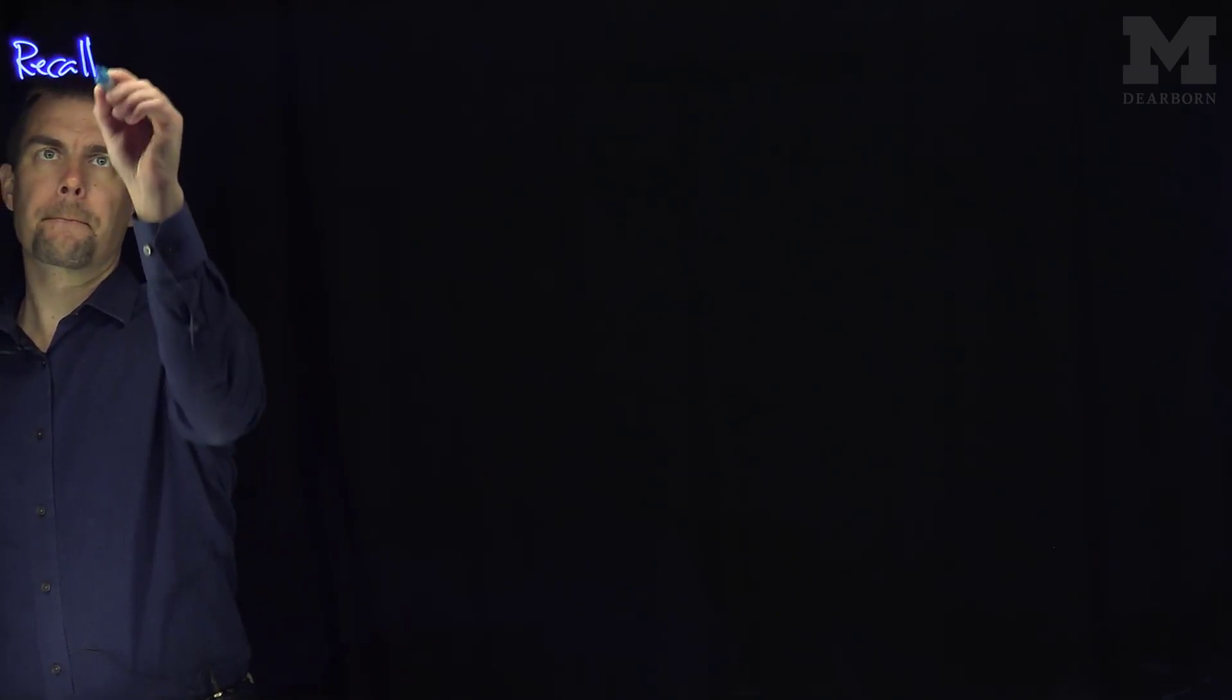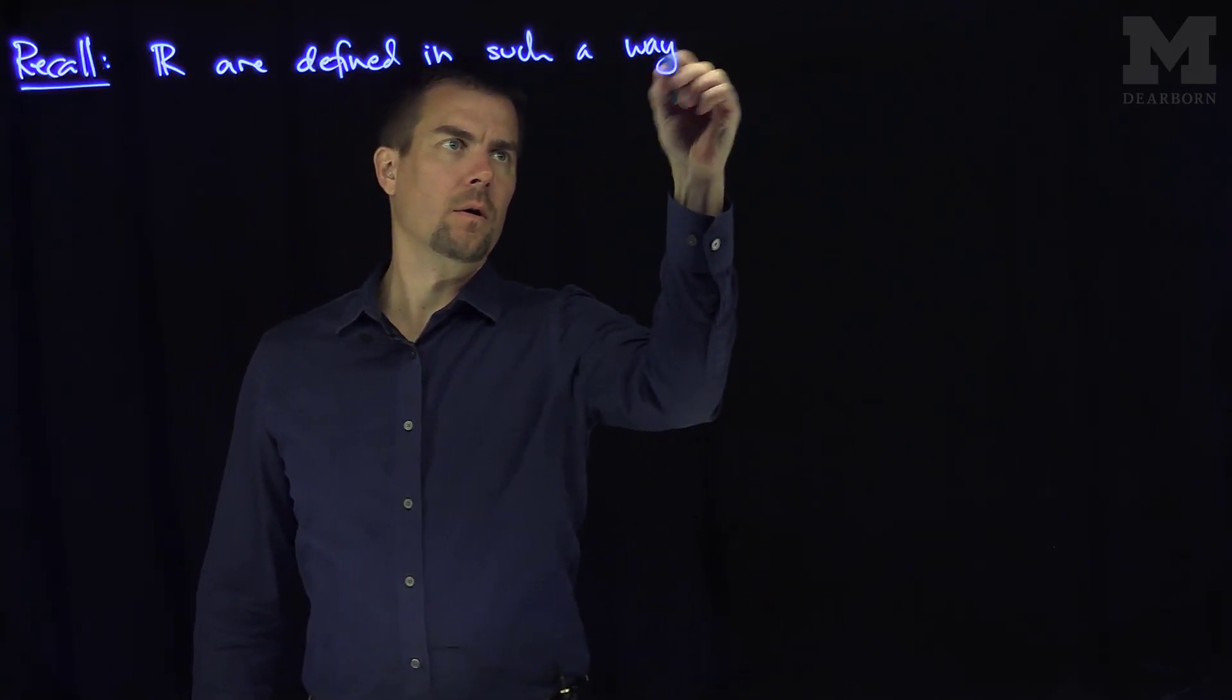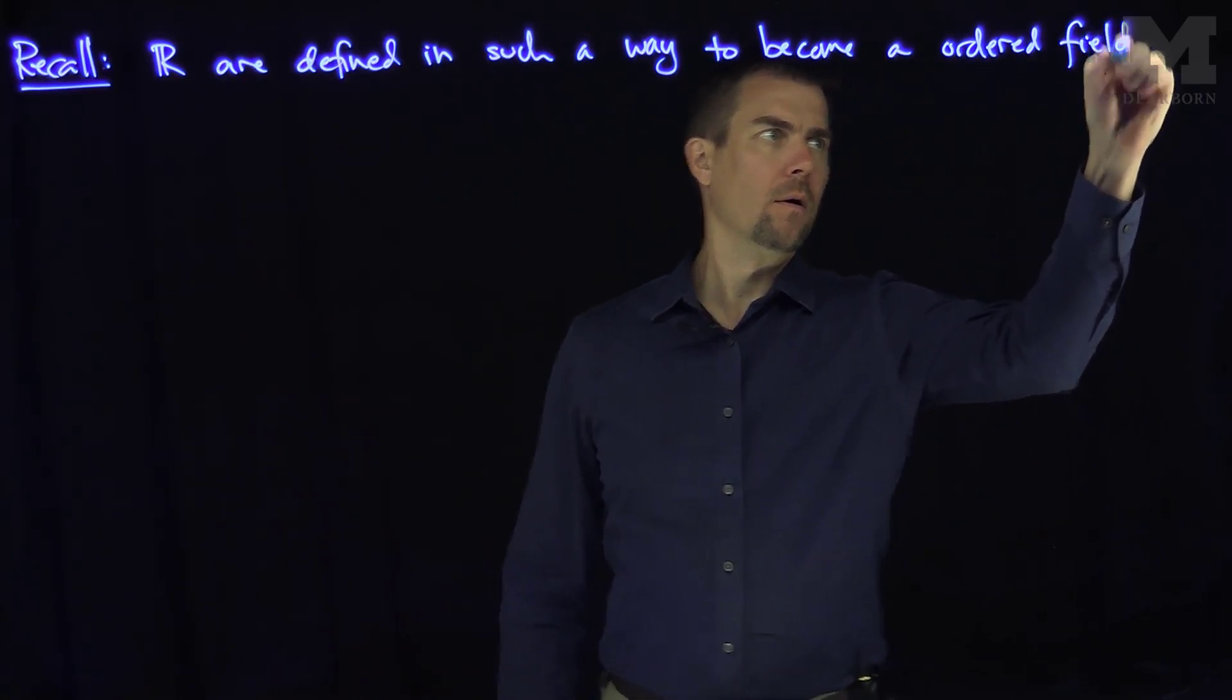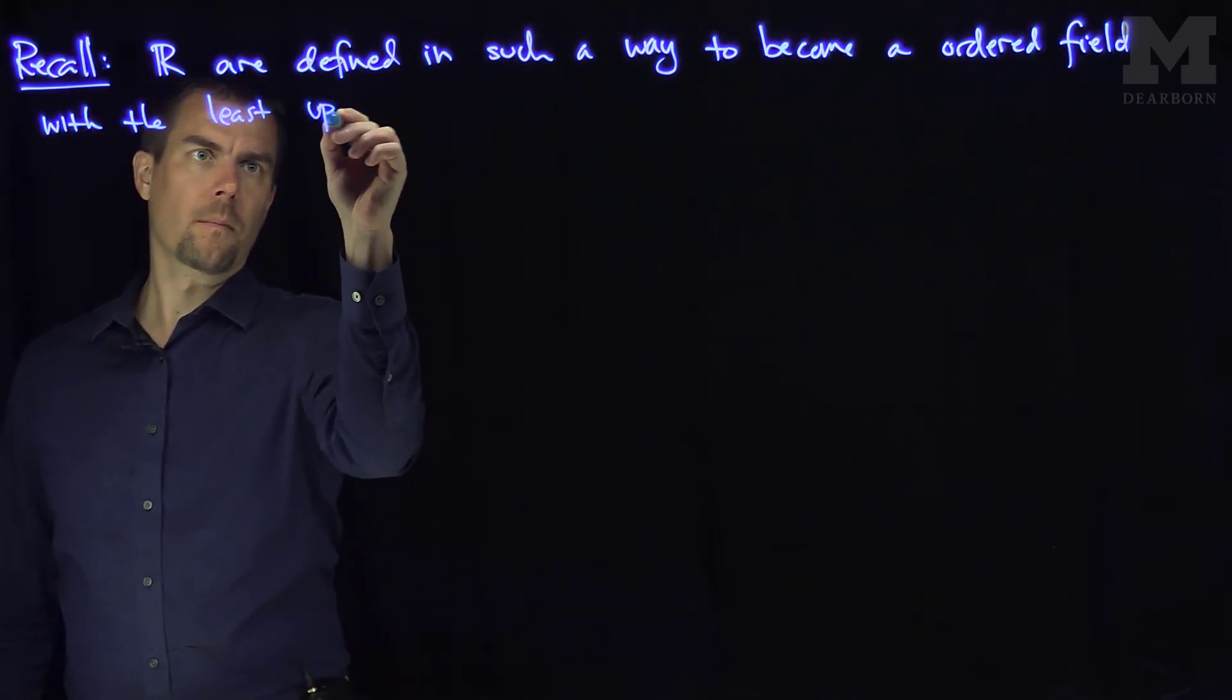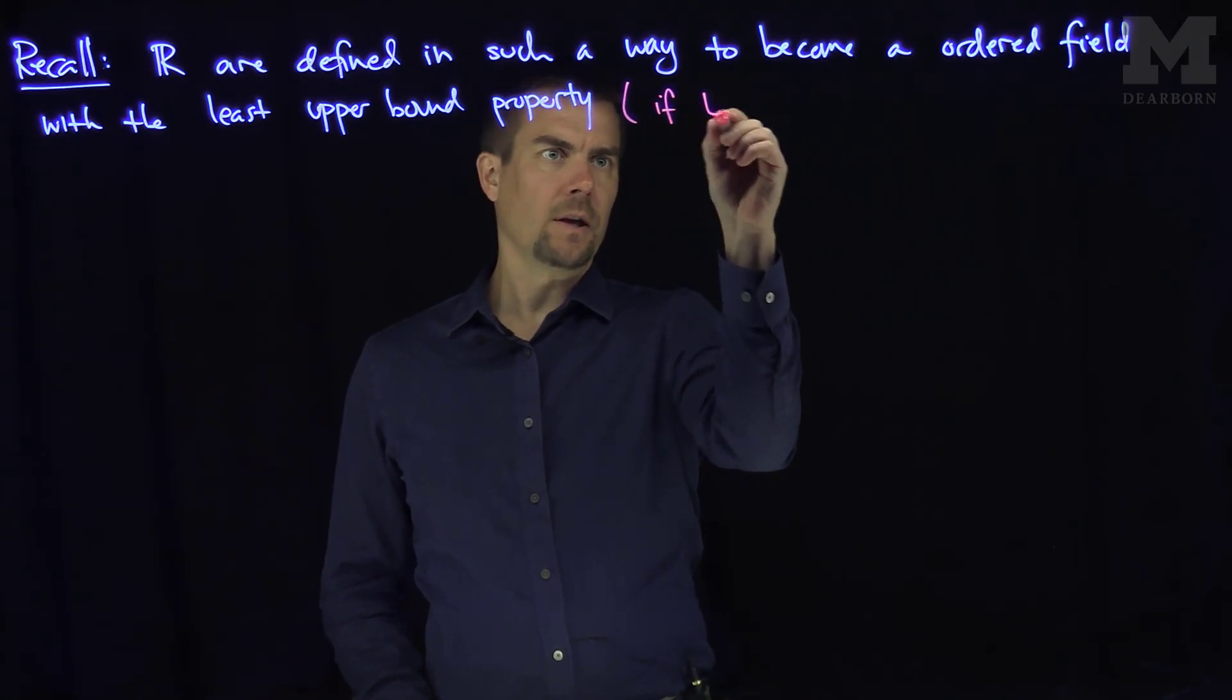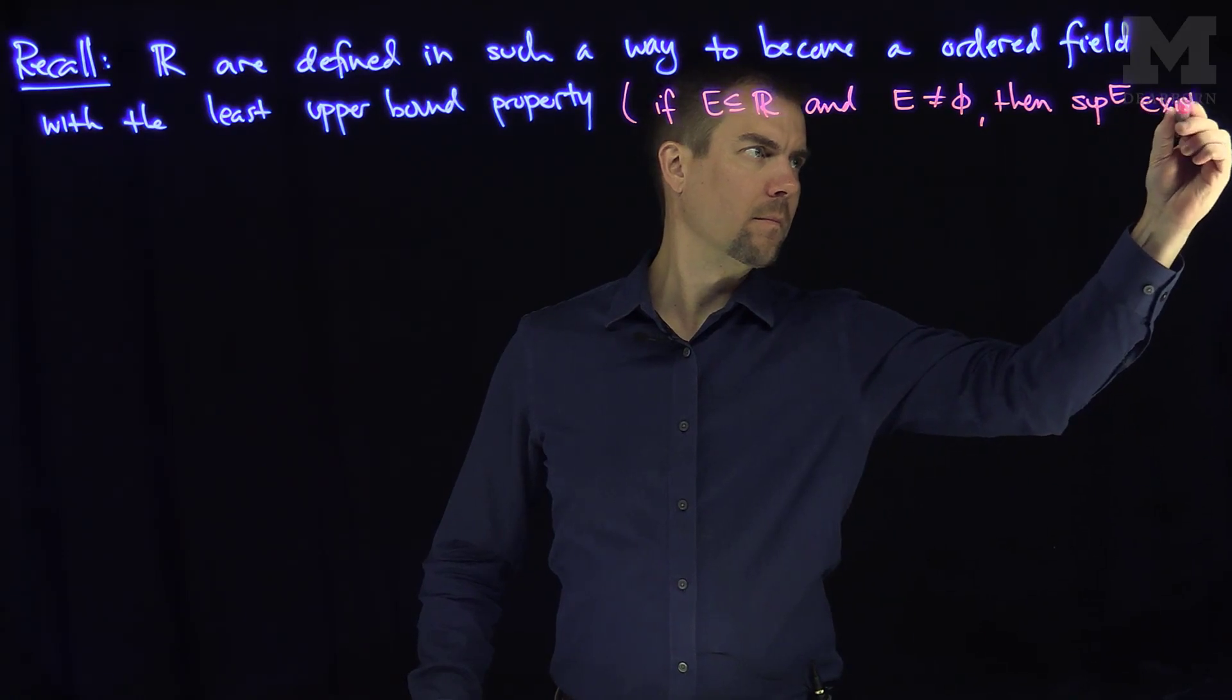We recall the real numbers are defined in such a way to become an ordered field with the least upper bound property. The least upper bound property means that if E is a subset of R and E is not empty, then the supremum exists in R.